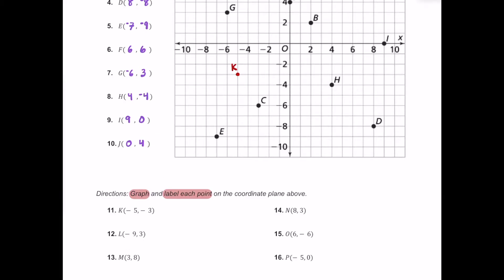What about L? L is negative nine comma positive three. Start at the origin, go nine units to the left — here's negative nine — and then positive three means three units up. So here is where L is going to be, and we plot the point and label it L.